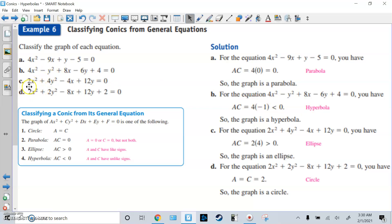Part c: we have positive 2, positive 4, different values. 2 times 4 is 8. That's going to give us an ellipse. That's greater than 0. And the last one, we have 2 and 2. They're the same number. So this has to be a circle. A equals C equals 2. That's a circle.